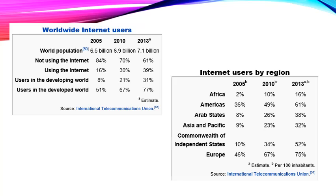These tables give more information about worldwide internet users. The first table shows the difference in internet use in 2005, 2010 and 2013. Users in the developing world rose from 8 percent up to 31 percent, while users in the developed world increased from 51 percent in 2005 to 77 percent in 2013. The second table looks at different regions — in Africa, only 2 percent had internet access in 2005, climbing to 16 percent by 2013, whereas in America it went from 36 percent in 2005 up to 61 percent in 2013.